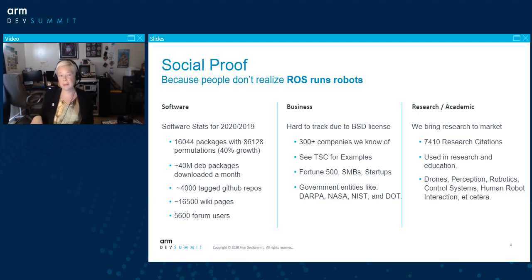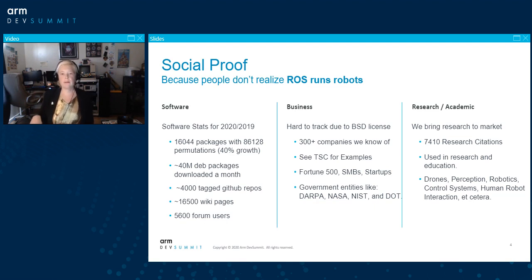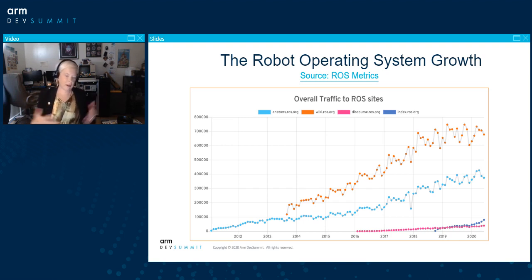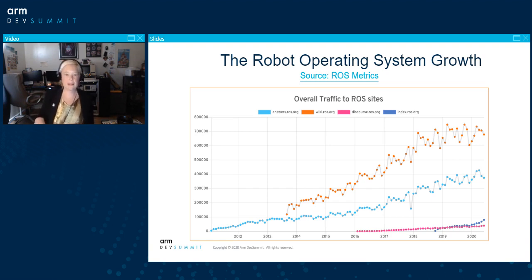From the academic side, as of August there were 7,400 citations of the original ROS paper, and it's used at many universities for drone applications, perception, control systems, human-robot interaction, and lots more. If you need numbers to convince your boss to try ROS, metrics.ros.org will give you some of these metrics. We also put out a yearly metrics report that makes a strong case that there's enough inertia behind the library that it's worth checking out.